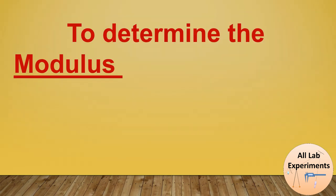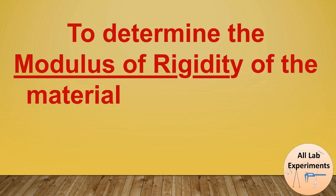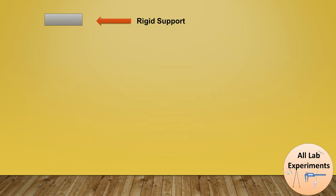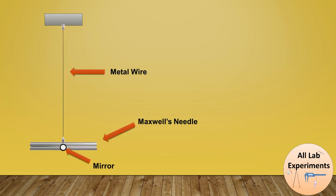Hello friends, today we are going to determine the modulus of rigidity of a material using Maxwell's needle. In this experiment, we require a rigid support. The Maxwell's needle is hanging from this rigid support using a metallic wire. This is the wire whose modulus of rigidity we are going to find out.